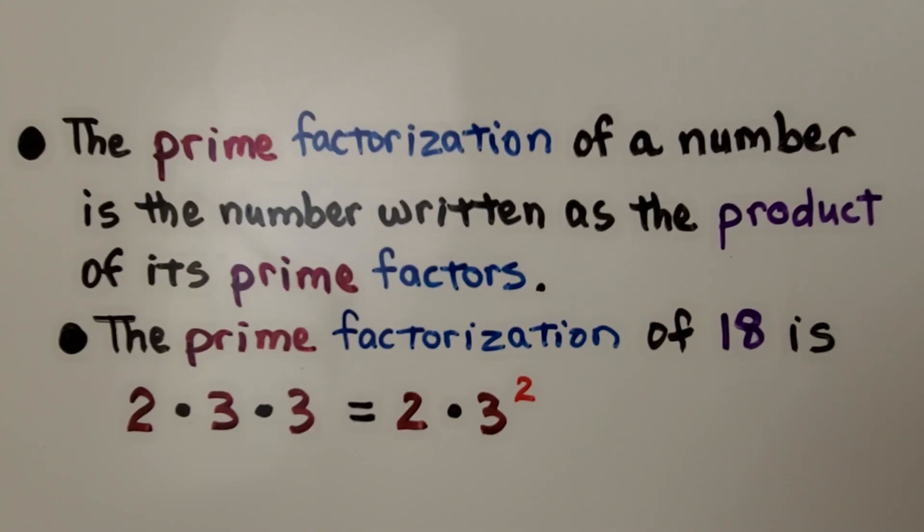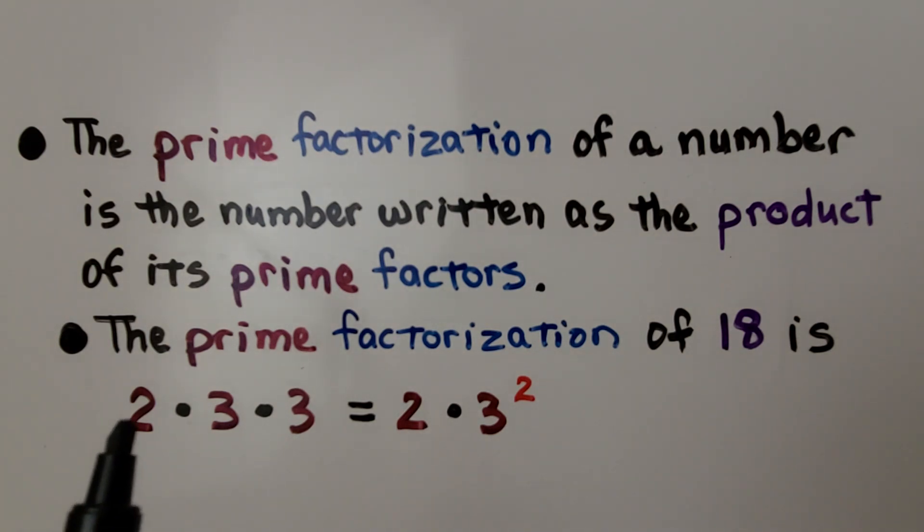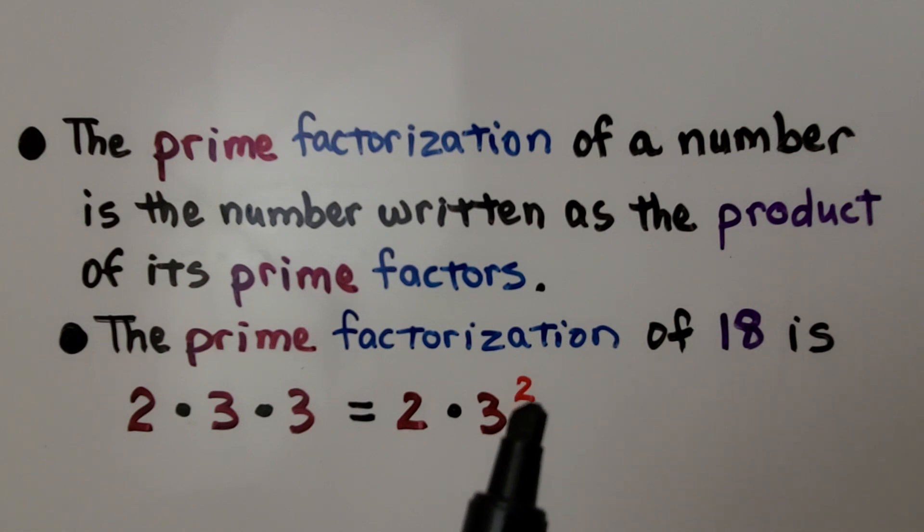The prime factorization of a number is the number written as the product of its prime factors. The prime factorization of 18 is 2 times 3 raised to the second power. The factors of 18 are 2, 3, and 3. We have 3 twice here, so we're going to raise it to the second power. 2 times 3 is 6, and 6 times 3 is 18.